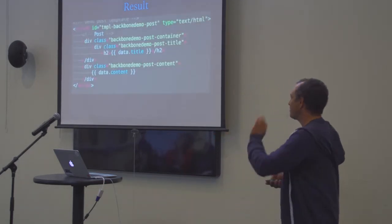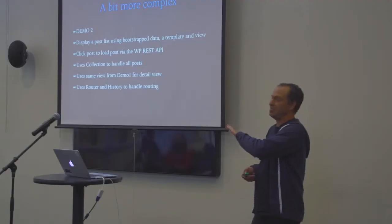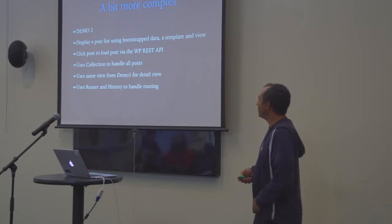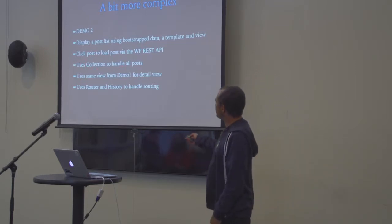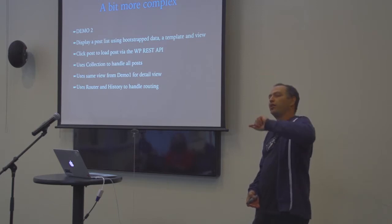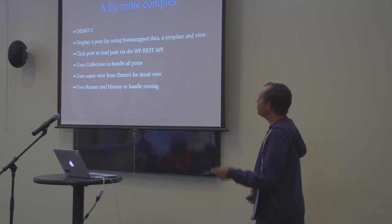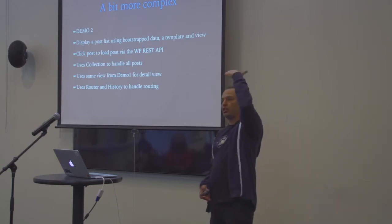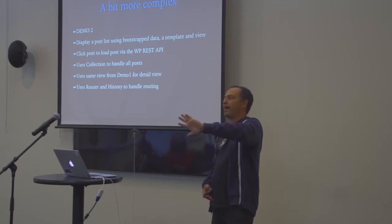That was the original template — that's exactly what we have at the end. Demo two is going to be almost the same thing except instead of the detail view, we're going to start with a list of posts. You can click on each post and it will take you to the detail view we already created in demo one, adding a little interactivity. We're going to use a collection to handle the group of posts, and we're also going to bootstrap the list of posts — so when the page loads, we'll have a list of titles of all the posts. As soon as you click on one, it will make an AJAX request back to the API to get the actual content, and it will also use the router and history so the URL changes every time you drill down.